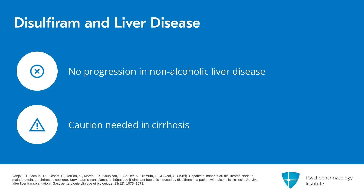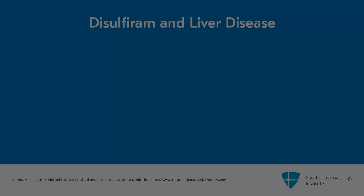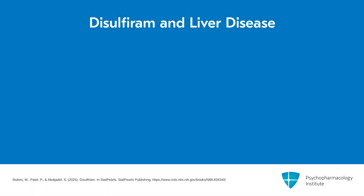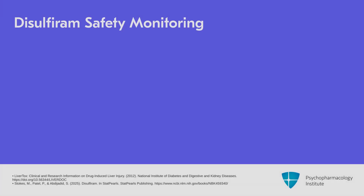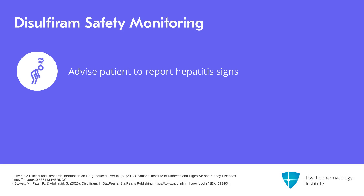There is no cross-sensitivity to liver injury between disulfiram and the other MAUD agents. When managing hepatic disease with disulfiram, any appearance of signs or symptoms of liver injury should lead to immediate discontinuation. If the person is not on a sub-therapeutic dose and is not drinking, and liver function tests worsen, you would discontinue. Advise the patient to notify you or an emergency department immediately if there are signs of hepatitis — which can be vague things like fatigue and weakness, so it is a little hard to follow.